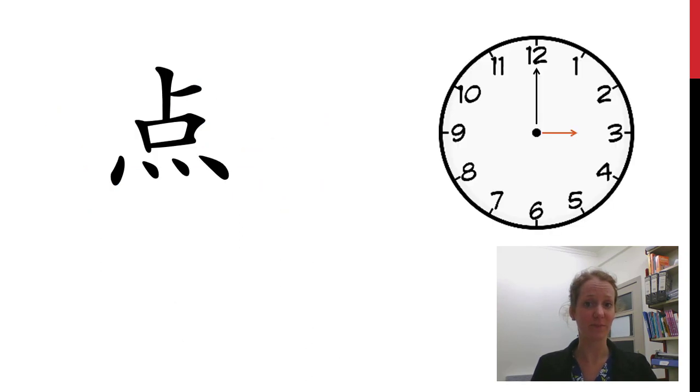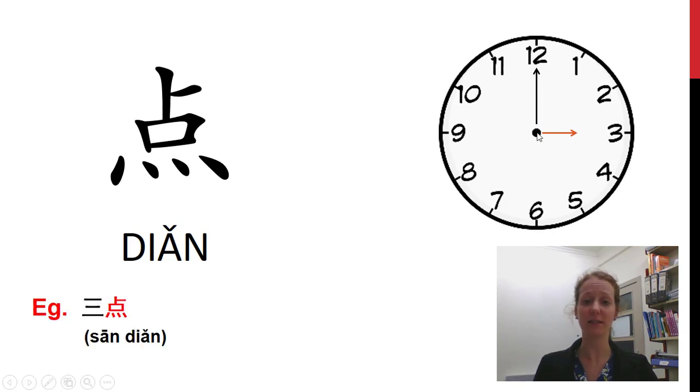First word: 電. For example, the little hand is at the 3, and we know it's 3 o'clock, so we say 三點.